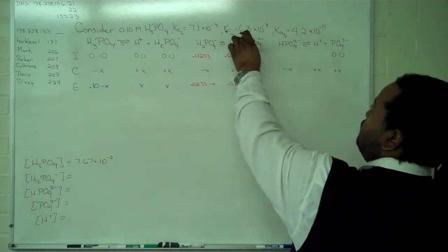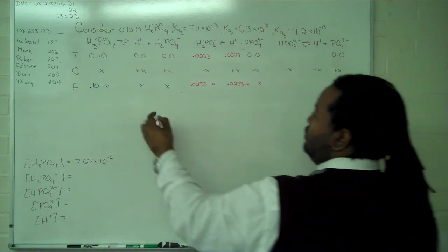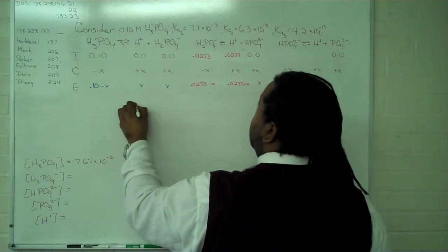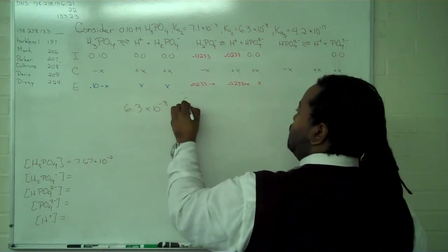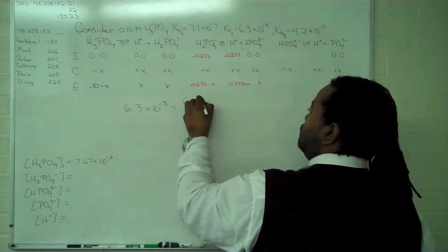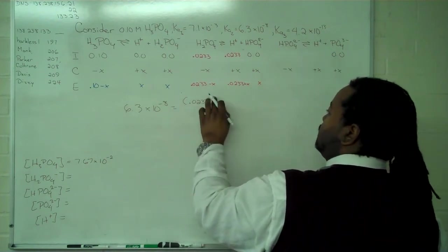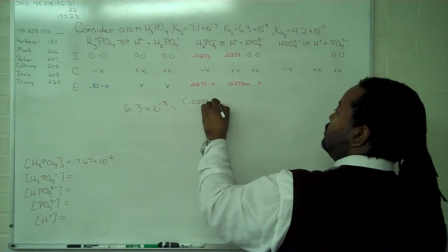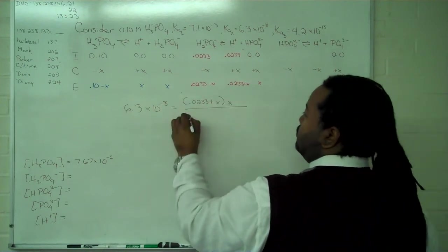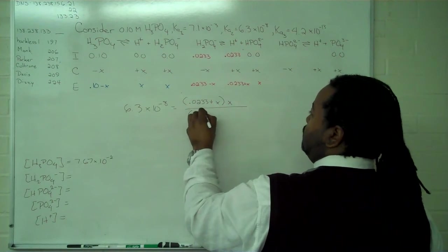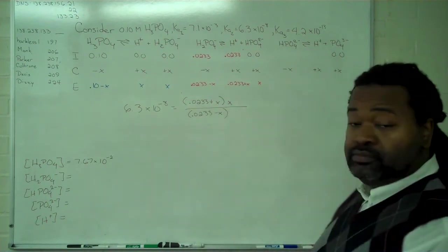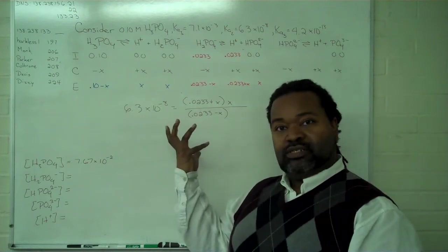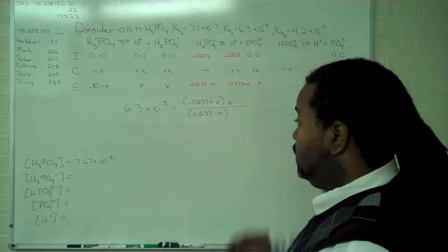So we're going to substitute in, this time using our second constant. 6.3 times 10 to the minus 8 equals 0.0233 plus x times x up top, and 0.0233 minus x on the bottom. So now we just need to multiply through everything to get a quadratic.